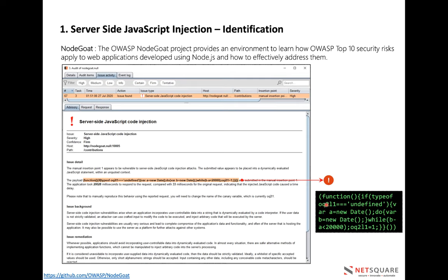The payload creates a function and checks a condition using typeof on a random undefined variable. It defines variable A as a new Date and variable B as a new Date. Then a while loop runs during that operation. If the response exceeds 20,000 milliseconds, the response is delayed — which indicates server-side JavaScript injection. Additionally, if our inputted value — for example typeof E68Q4 — is reflected in the response as 'not defined', it means our injected input is being interpreted server-side.